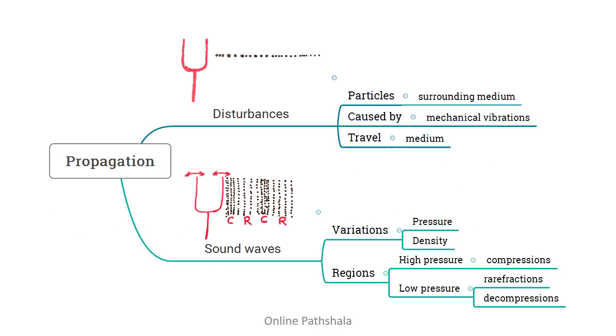Okay friends, let us summarize what we have learned in this video. We discussed that mechanical vibrations cause the particles of the surrounding medium to vibrate. Thus, sound travels as disturbances of particles in the surrounding medium. It is also important to note that it is the disturbances that travel into the medium and not the particles themselves. We also learned that sound waves are variations in pressure and density in the medium. The regions of high pressure are known as compressions and the regions of low pressure are known as rarefactions or decompressions. We can visualize sound waves as a series of compressions and decompressions or rarefactions as shown in the picture.